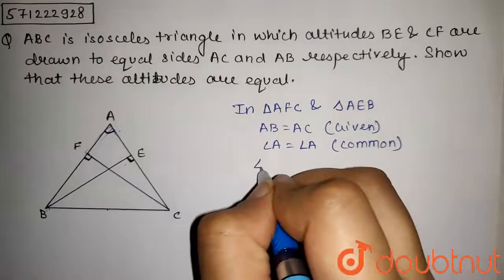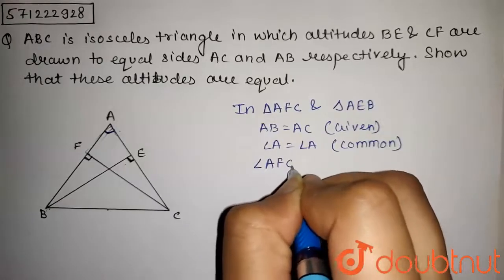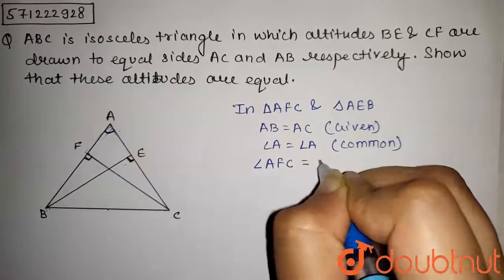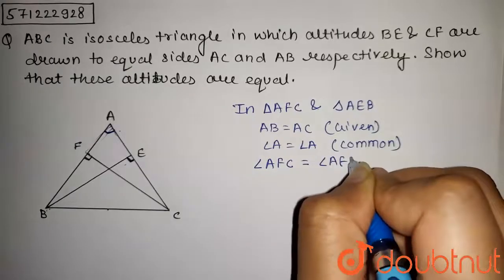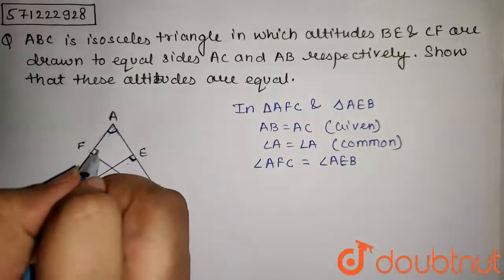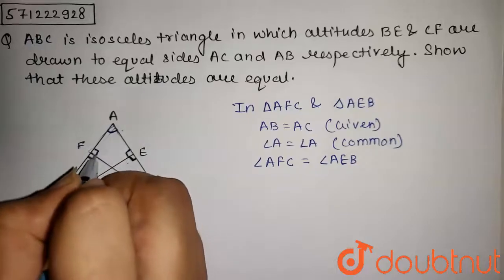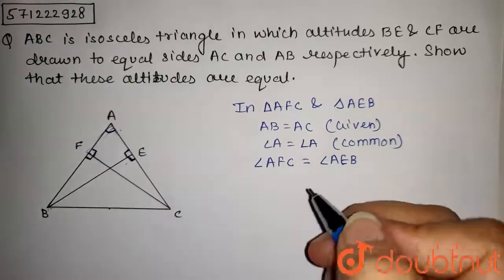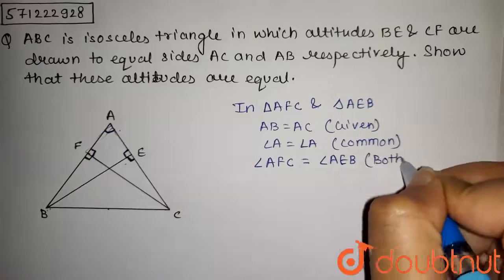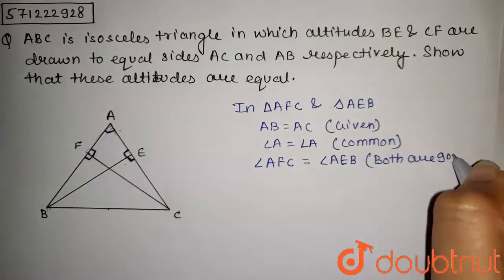And angle AFC is equal to angle AEB, that is this angle and this angle, as both of these are 90 degrees. So both are 90 degrees.